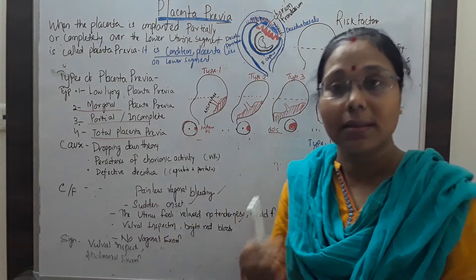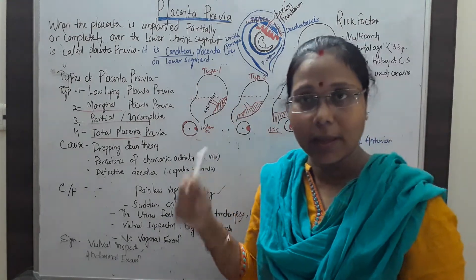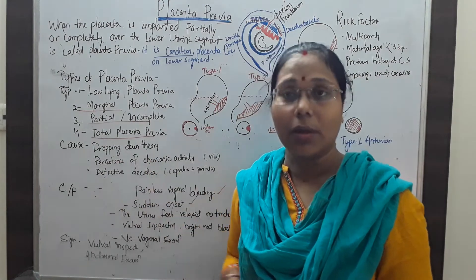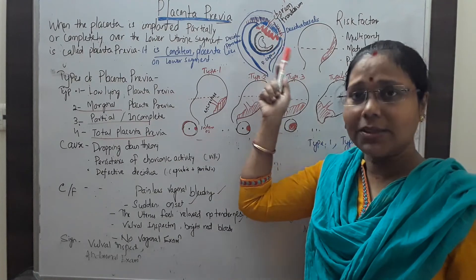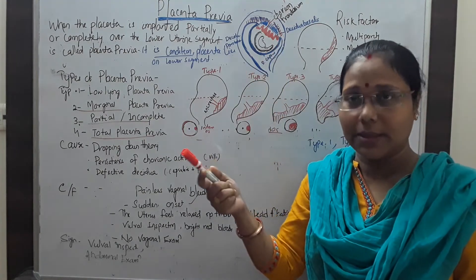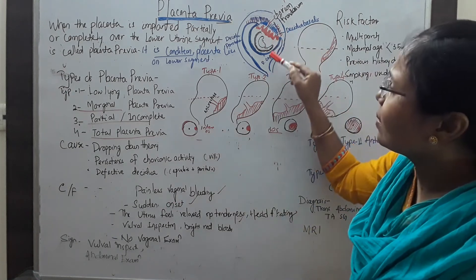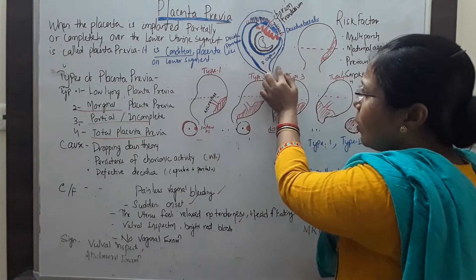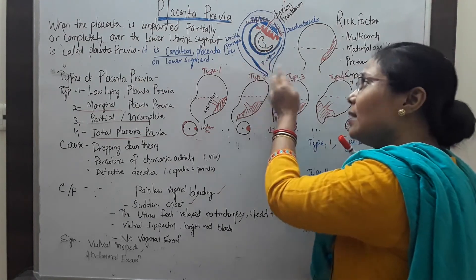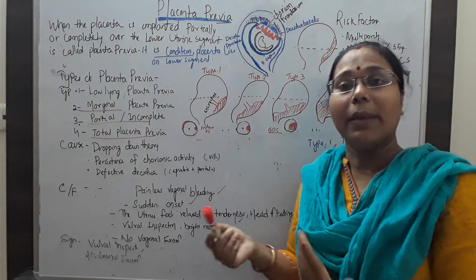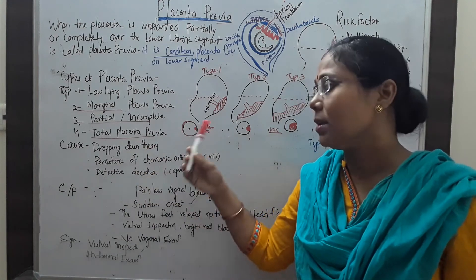Now we come to know about the causes — why abnormal positioning of the placenta takes place. The first is the dropping down theory. This theory suggests that when implantation takes place at the tenth day of fertilization, if the embryo drops down to the lower uterine segment and forms implantation there, then the placenta is formed on the lower uterine segment. This is one of the theories — the dropping down theory.